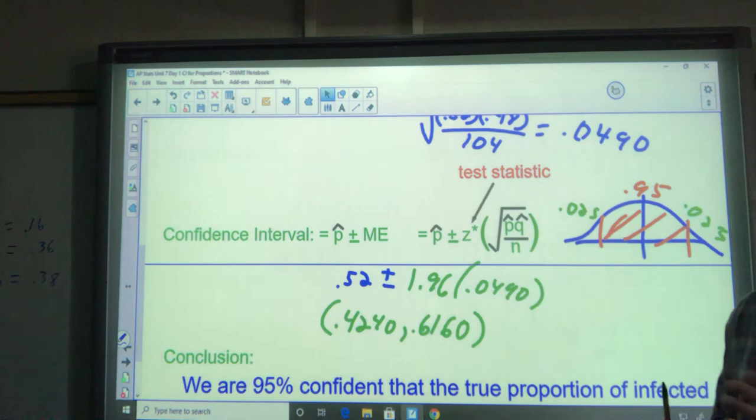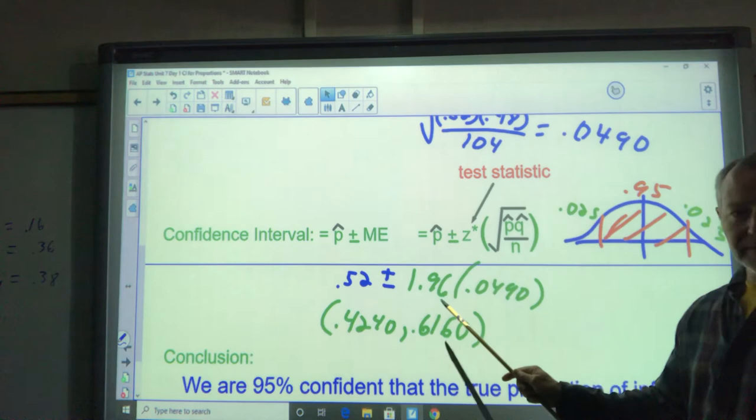The negative isn't important. We're just looking for how far apart these are, how many standard deviations away they are. This would be positive 1.96 by symmetry. So 1.96 is my Z score.